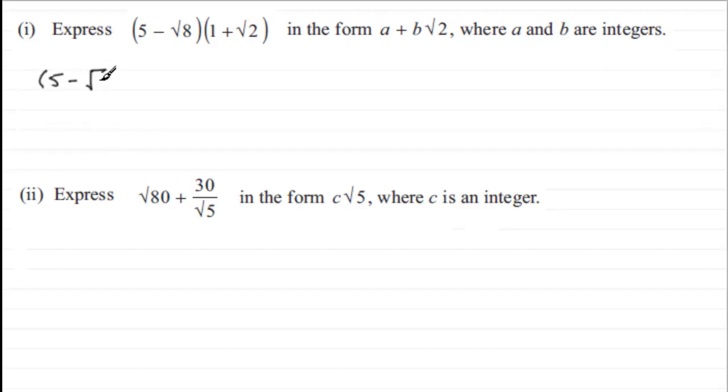5 minus the root of 8 multiplied by 1 plus root 2, and we expand this in the usual way with brackets. We do 5 times the 1, which is going to be 5, and then we've got 5 times plus root 2, which is going to be plus 5 root 2.